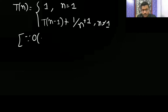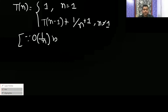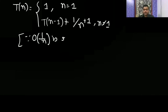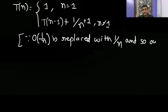When n is not equal to 1, the time equals T(n-1) plus 1/n. Here, B(1/n) is replaced with just 1/n, so our recurrence is written in terms of 1/n. Since we are replacing B(1/n) with 1/n, our answer will also be in terms of that.